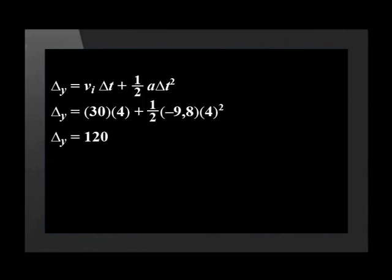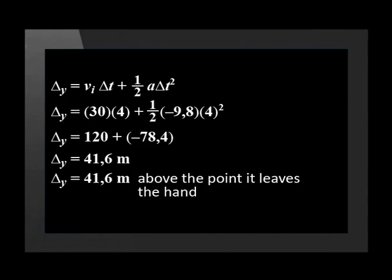We substitute values into the equation: 30 times 4 is 120. Half times negative 9.8 times 4 squared equals negative 78.4. Make sure you remember the negative signs. Subtracting 78.4 from 120 gives 41.6. Since we need to calculate position, the unit is meters, and the positive answer means upward. So the ball is 41.6 meters above the point it leaves the hand.